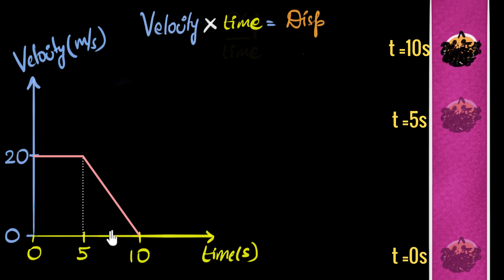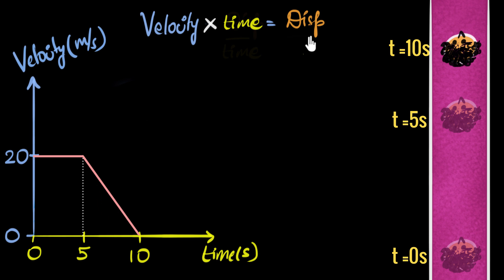The problem comes for the next five seconds, because the velocity is changing — it's decreasing. If it's decreasing, what number will I plug in? And how will I calculate displacement? That's the big question we want to try and answer.